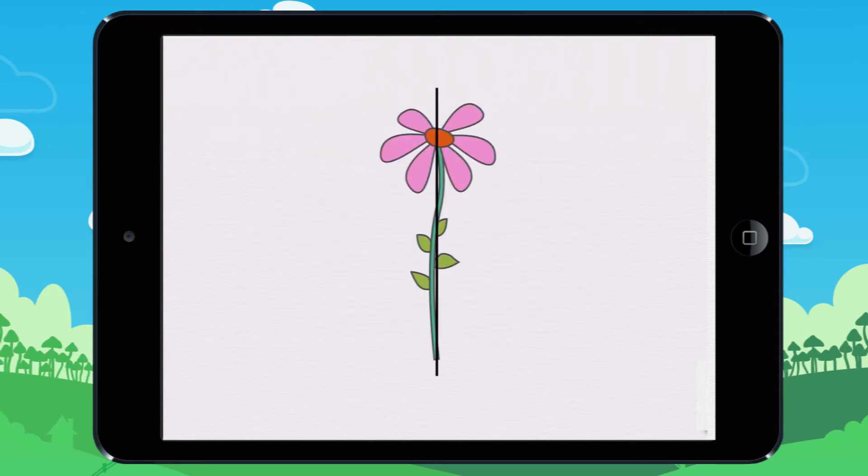Let's look at another example. The two parts of the flower don't match exactly. This flower isn't symmetrical.